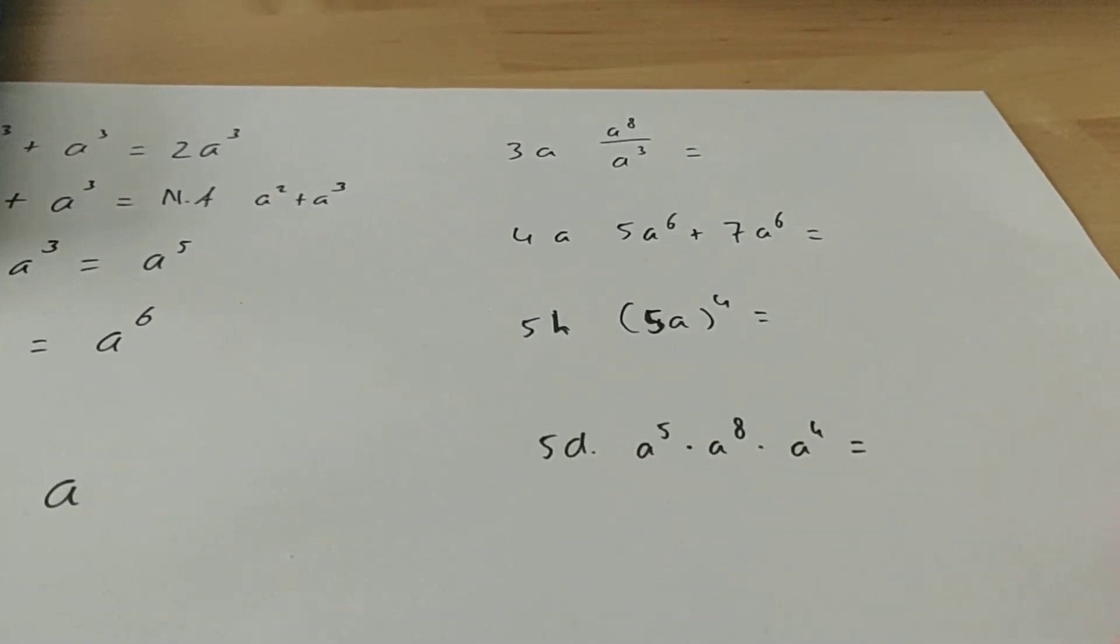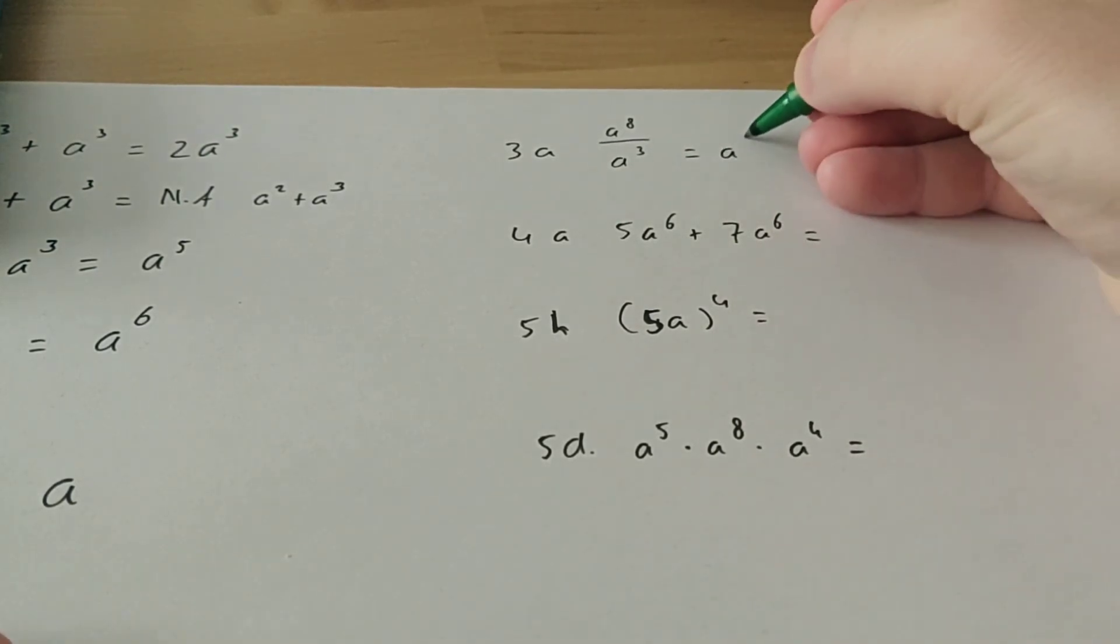Then let's go to a few examples. Here we have 3a. We have a power divided by a power. So we just saw, you have to do minus then. So 8 minus 3 is 5.